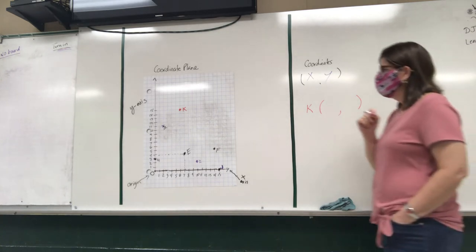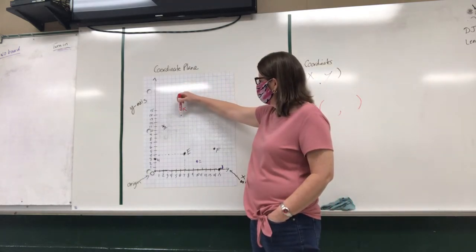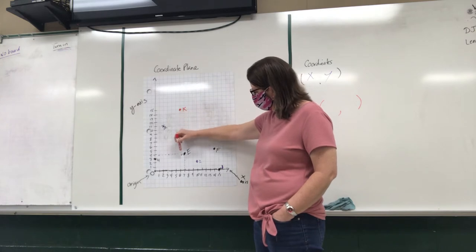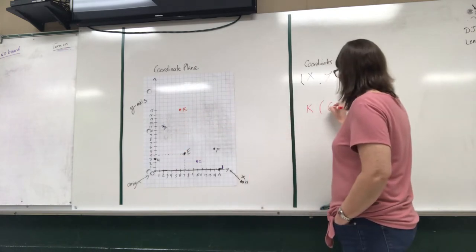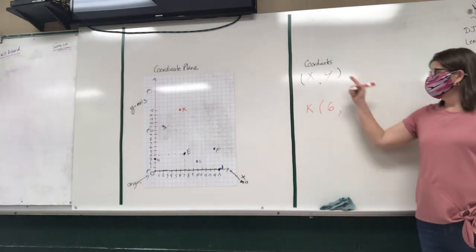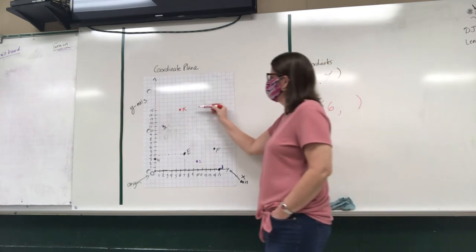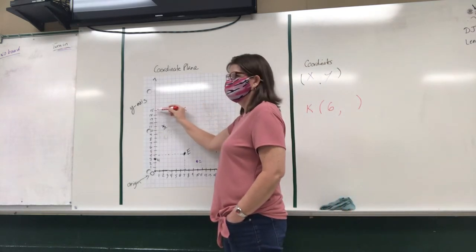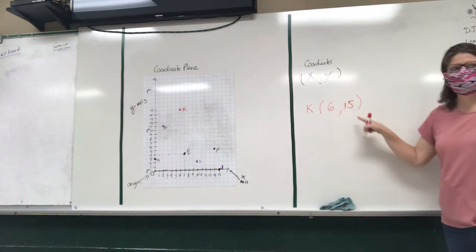Okay, so all you have to do is follow all the way down so you get to the x-axis. Six, not x. Okay, so six. Alright, so that's my first coordinate. And then my second one is my y. So I travel across to my y-axis and I'm at 15. So my point would be 6, 15. Not 15, 6, but 6, 15.